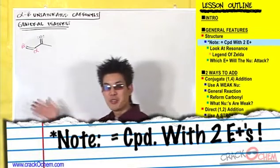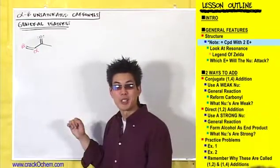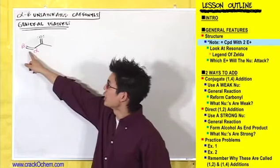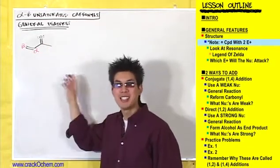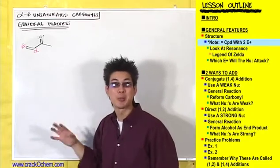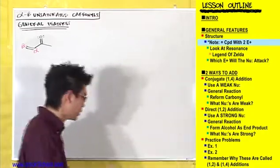So this is an alpha-beta unsaturated carbonyl compound, but we've all seen double bonds, alkenes, and we've seen carbonyls react before. So let's see what makes this guy special. Why do we give this guy a special name? Let's write a note up here.